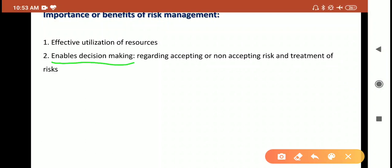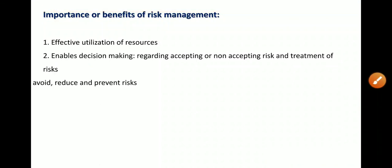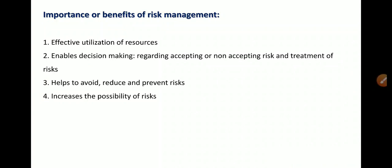The management are the persons taking care of risk management decisions. They have to take certain decisions from time to time — whether to accept the risk or to reject it, whether to take part in certain activities or not. Those decisions will be based on risk management in the organization. The third importance or benefit of risk management is it helps to avoid, reduce, and prevent the risk involved in business activities, as well as take precautionary measures to control that risk.